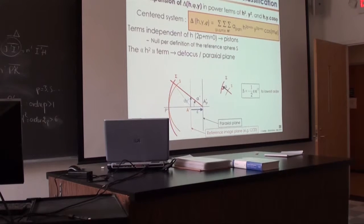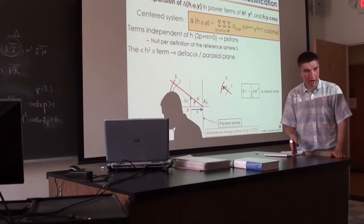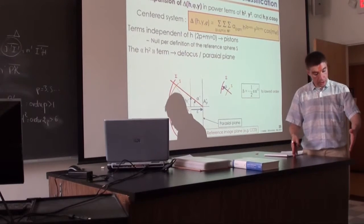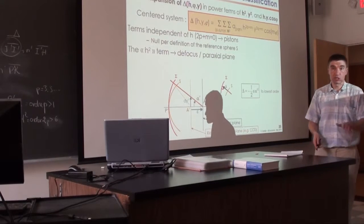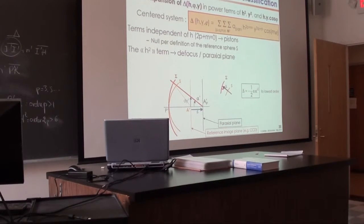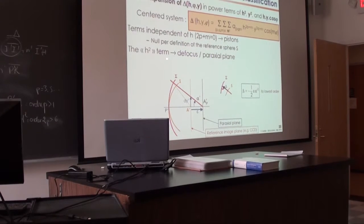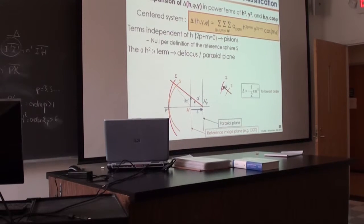Usually the reference sphere is centered on the paraxial image and intercepts the paraxial exit pupil, so it's a constant. Let us forget about that. Then to first order we have the H² term — N equals zero, Q equals zero — which is a defocus term, a defocus with respect to the paraxial plane. It's not an interesting aberration in itself, but I'm going to talk about it because we have to consider this term when we talk about chromatic aberrations.